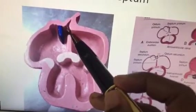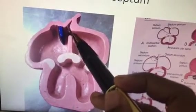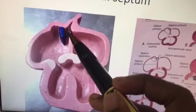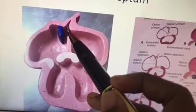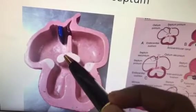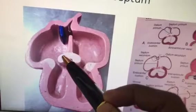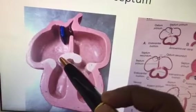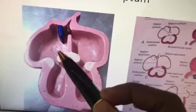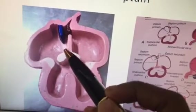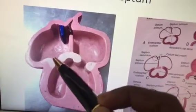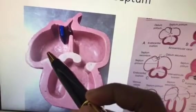Through apoptosis, an opening is formed here that is called the ostium secundum. The septum secundum is not getting fused with the endocardial cushion and this opening is called the foramen ovale.